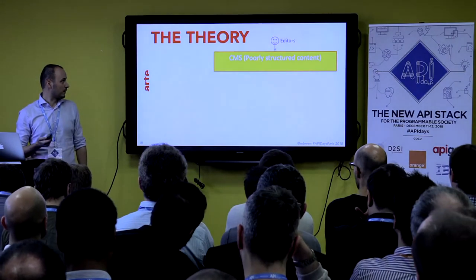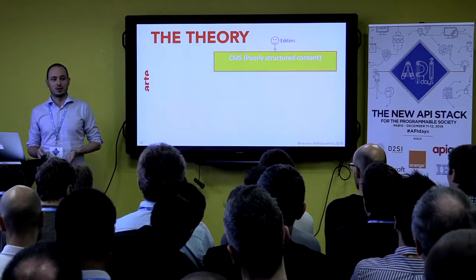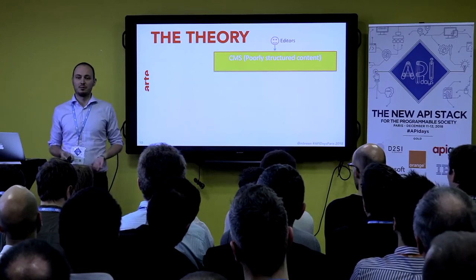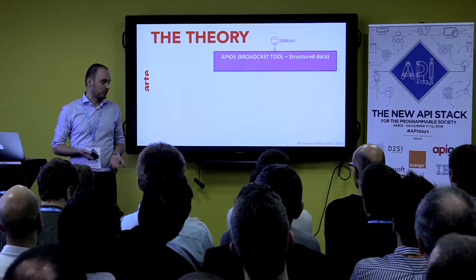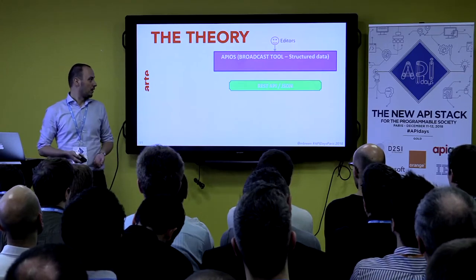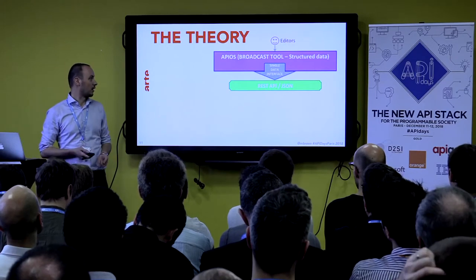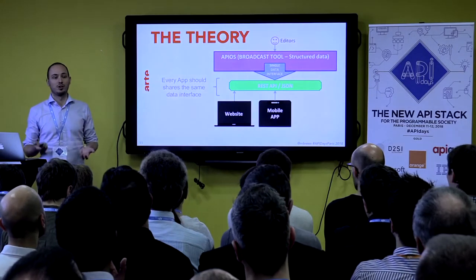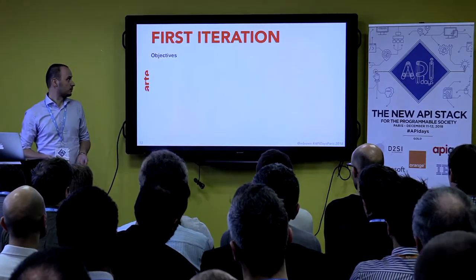Our first API — the theory was: let's dump the CMS. This was a very hard decision because we had a huge archive, but as the data was not structured, there was no way we would keep it. We used our broadcast tool called Appios, which has some structured data stored in an Oracle database. We built a REST API that communicates with Appios to get the data, and every time we make a new app, we just reuse the existing data interface.